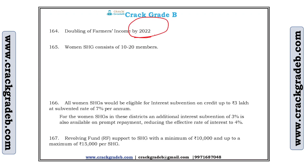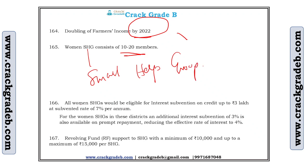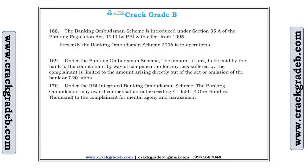Doubling of farmers' income target year is 2022. Women SHGs consist of 10 to 20 members. All women SHGs are eligible for interest subvention on credit up to 3 lakh rupees at 7% per annum. For women SHGs in certain districts, an additional interest subvention of 3% is available on prompt repayment, reducing the effective rate of interest to 4%. Revolving Fund (RF) support to SHGs is a minimum of 10,000 and a maximum of 15,000 rupees per SHG.